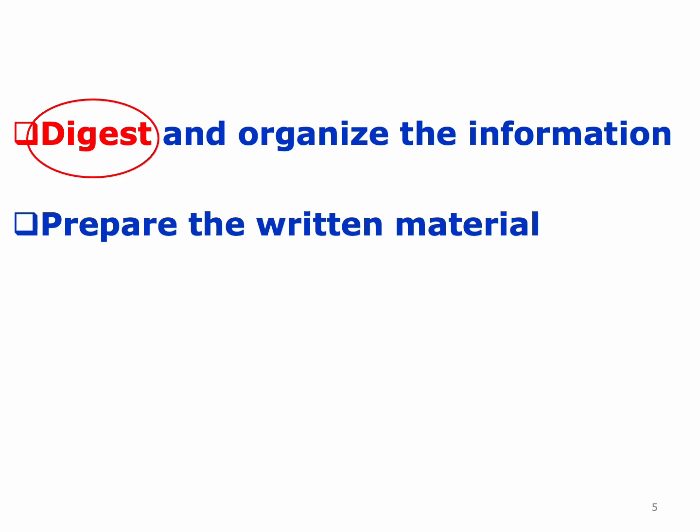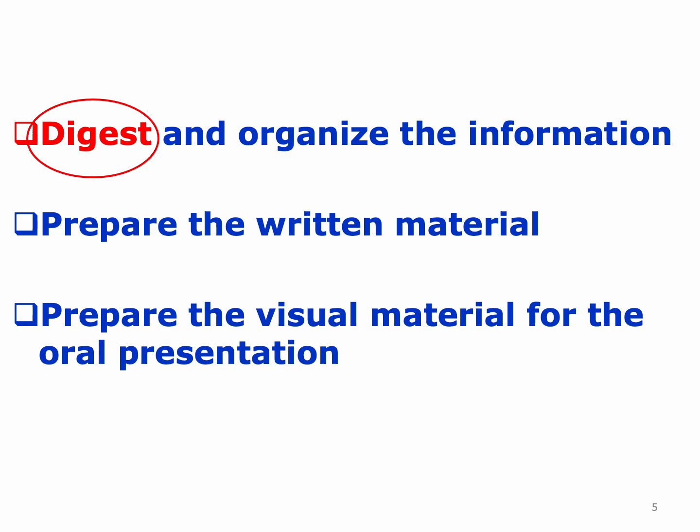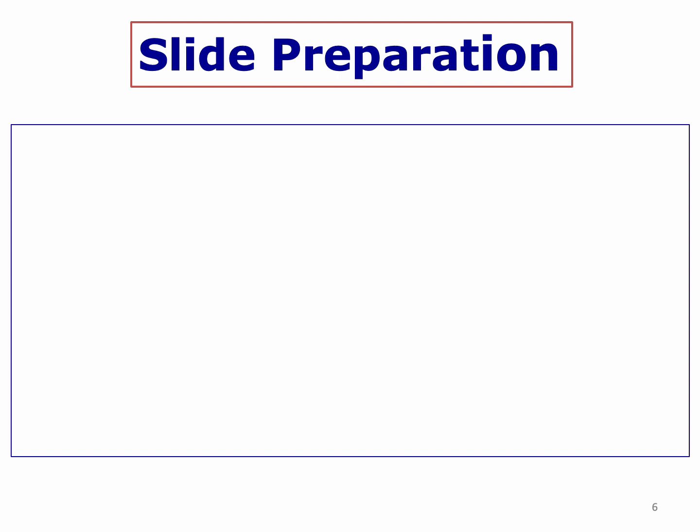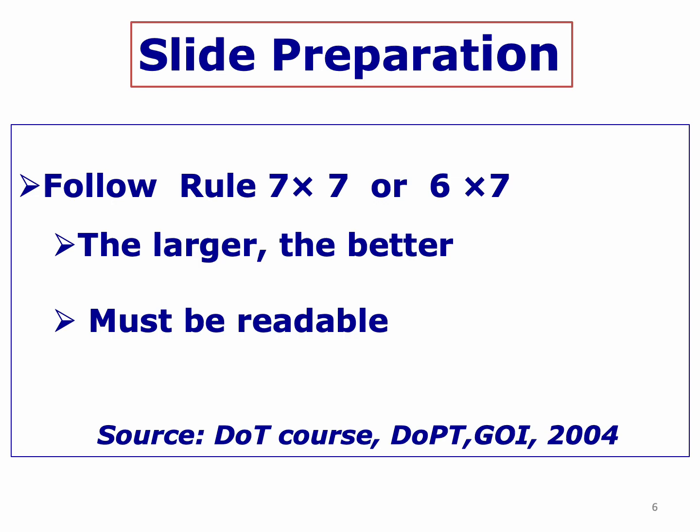Based on those notes, prepare the presentation. You must prepare the visual material for the oral presentation after digesting and organizing the information effectively. When preparing your slides, follow the rule called seven by seven: seven lines per slide, and each line must contain a maximum of seven words. A larger font size is better — it must be readable from the last row of the hall.